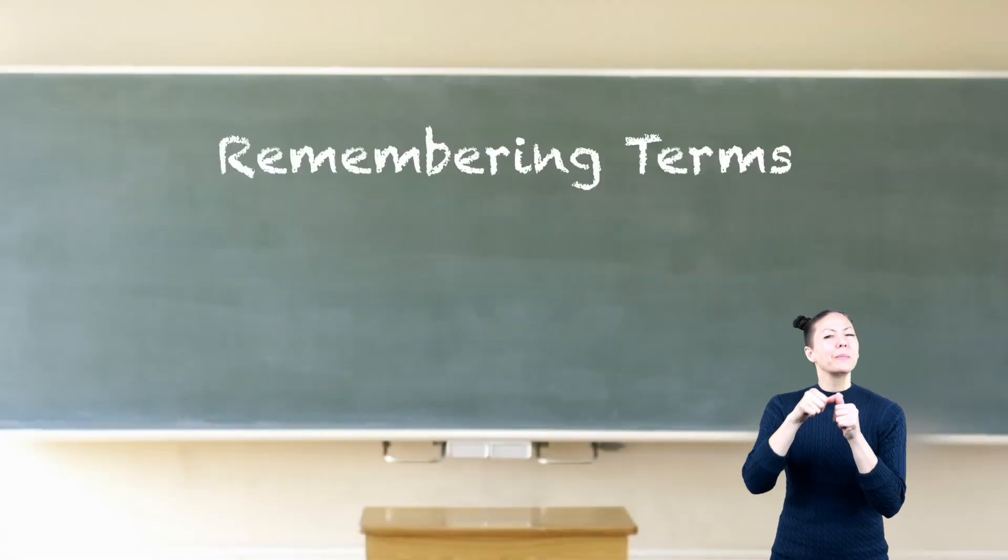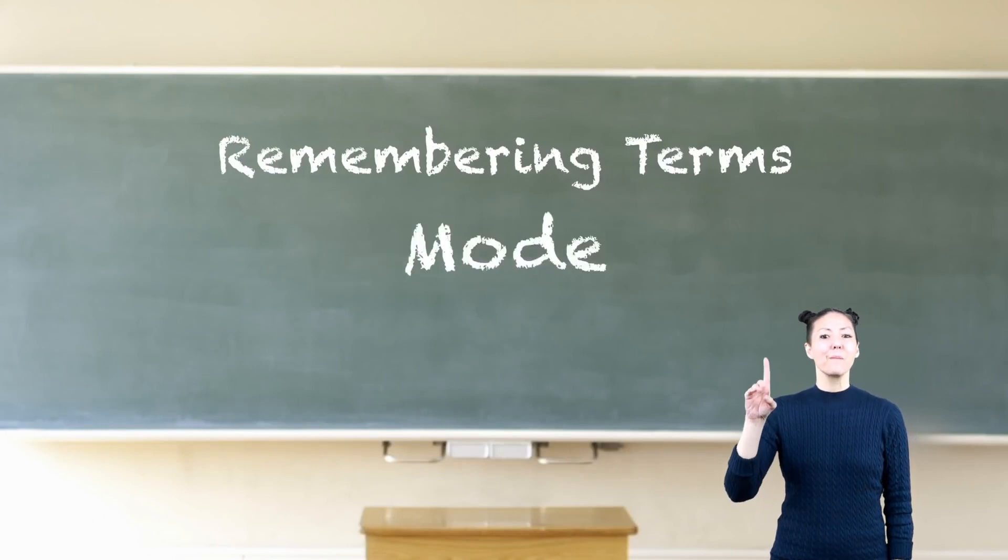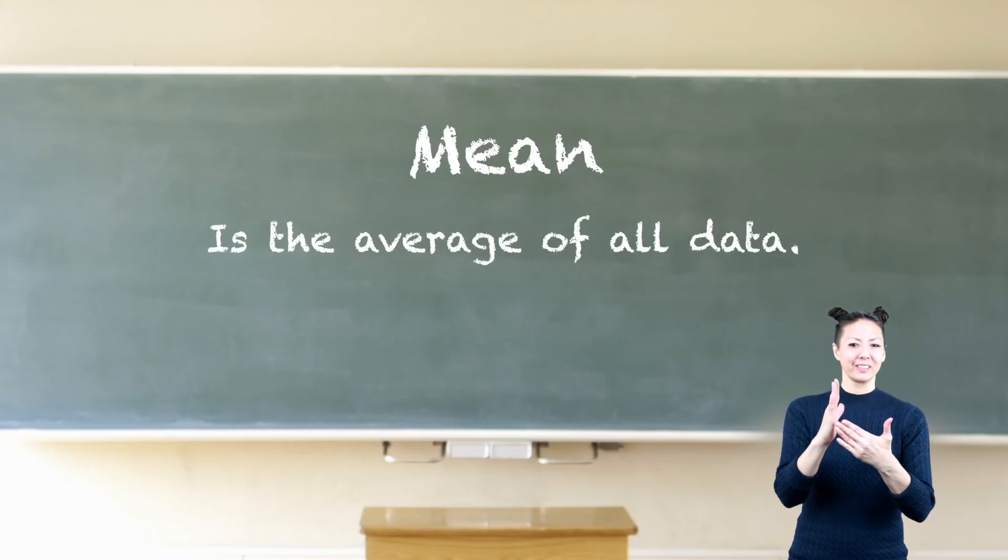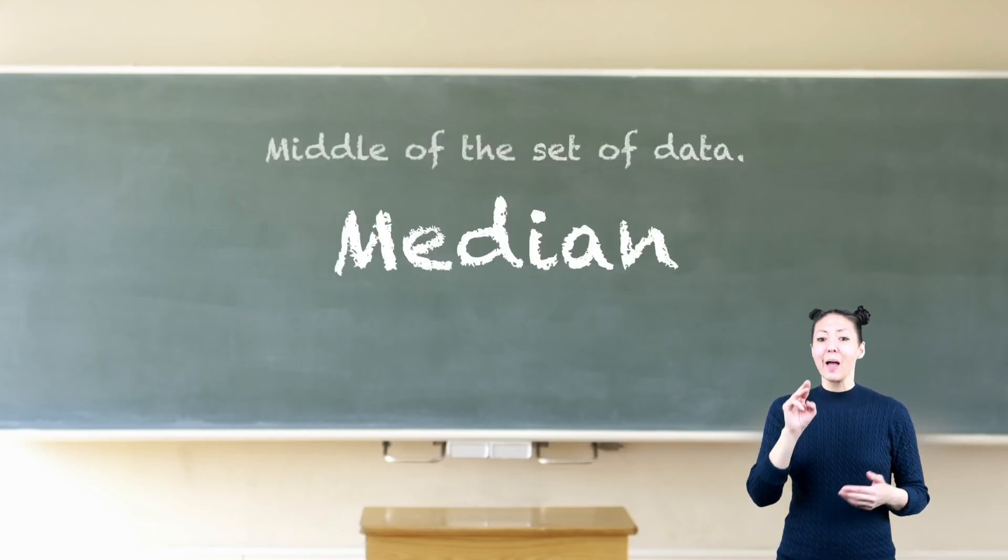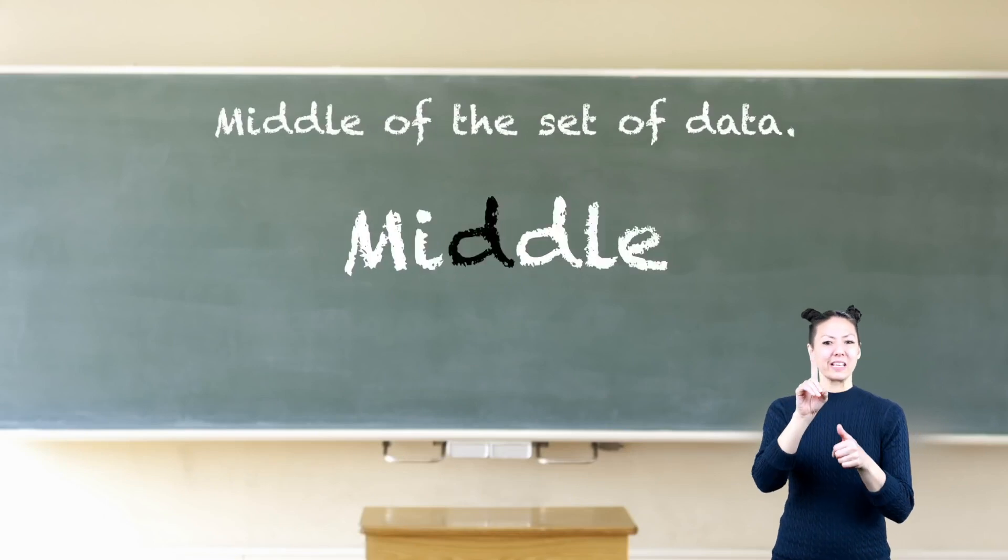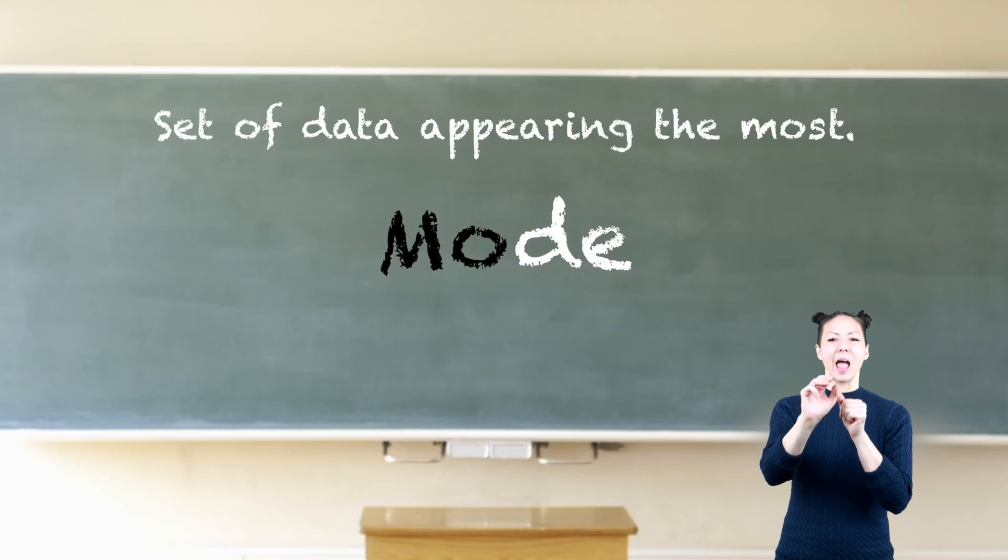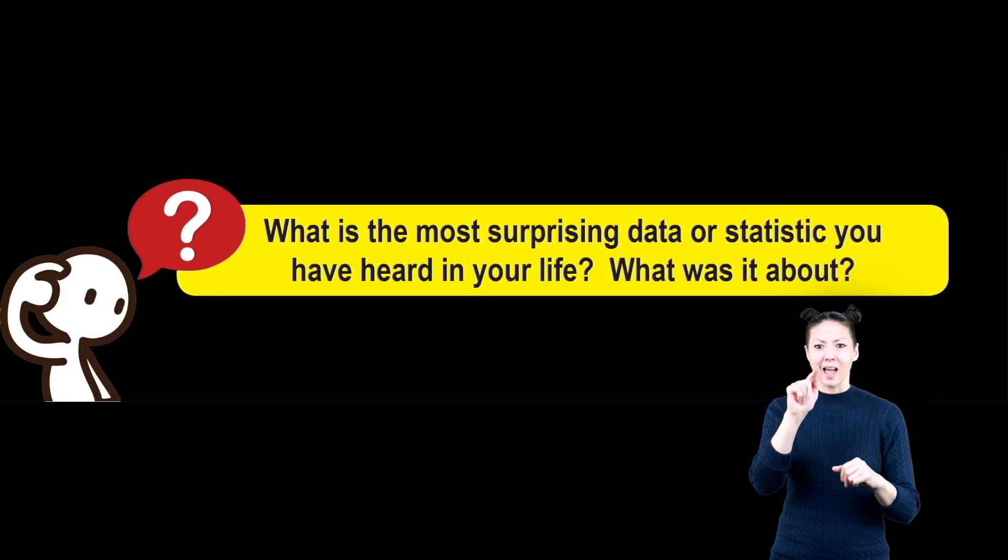Here's how to remember the statistical terms mean, median and mode. They all begin with the letter M. Mean is the average and takes the longest to solve, which might make you mean. The median has letter D just like the word middle, and mode begins with MO just like the word most.